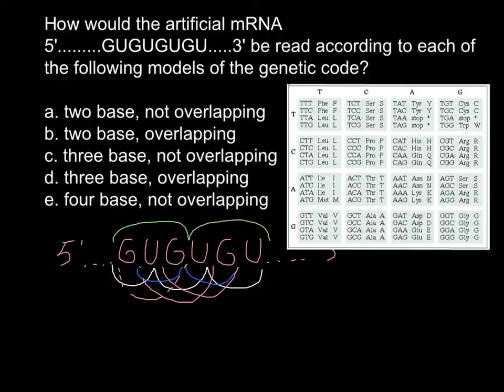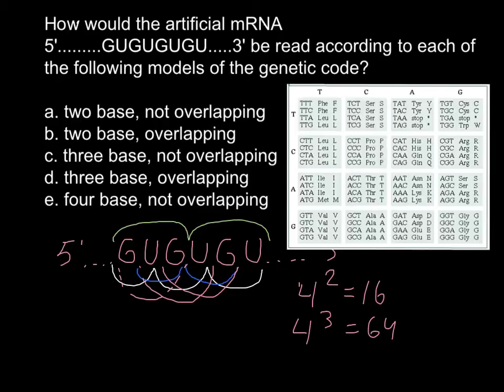I also have a mathematical proof. If we have four bases and one amino acid is coded by only two bases, then four squared gives us 16 different variants. This is not enough because we have 20 amino acids, so 16 variants with duplets is insufficient. The next option is triplets, and four cubed gives us 64 different variants, which is more than enough to code for 20 amino acids.